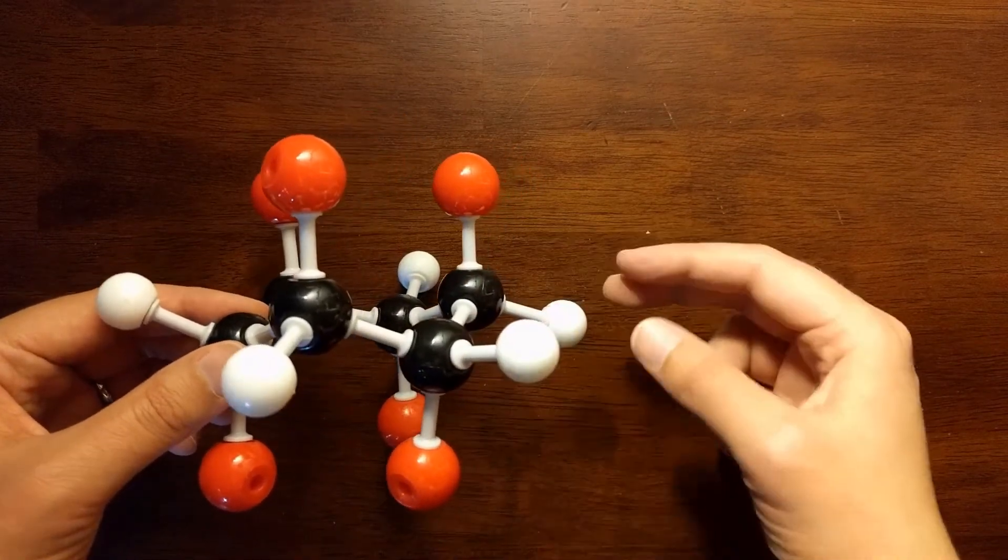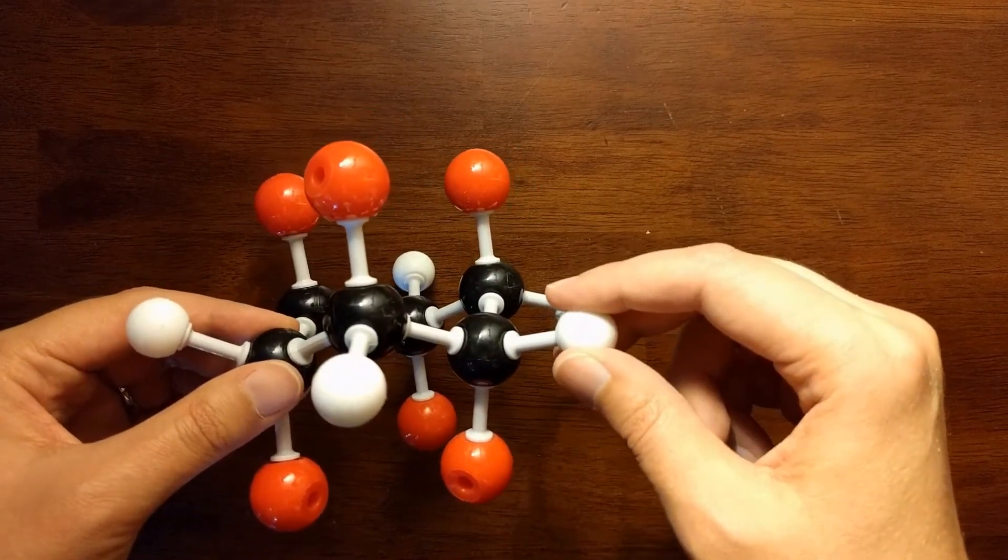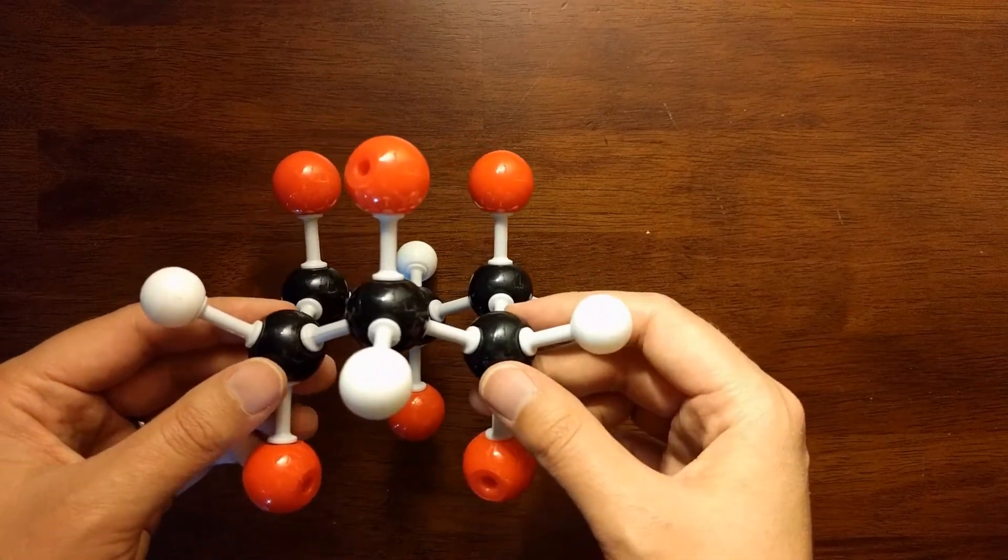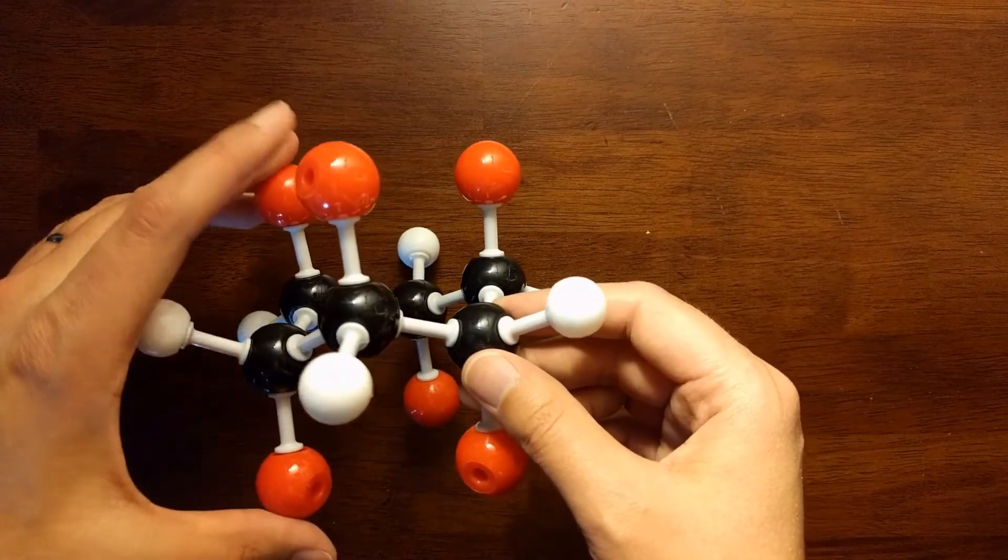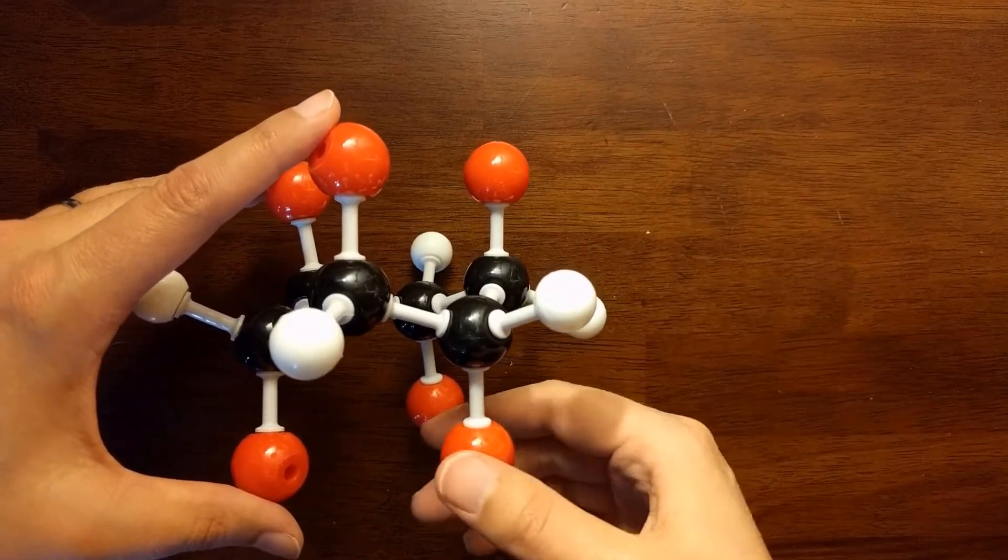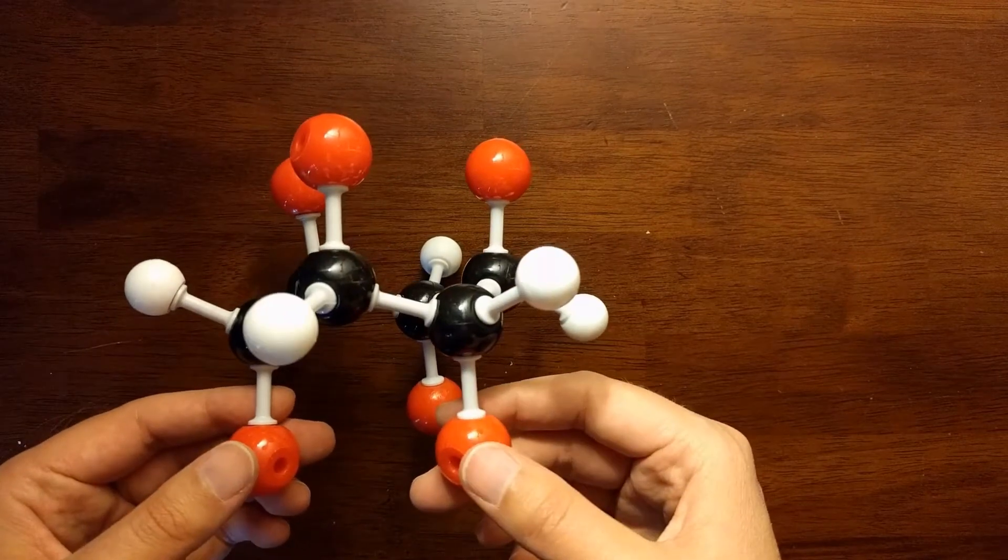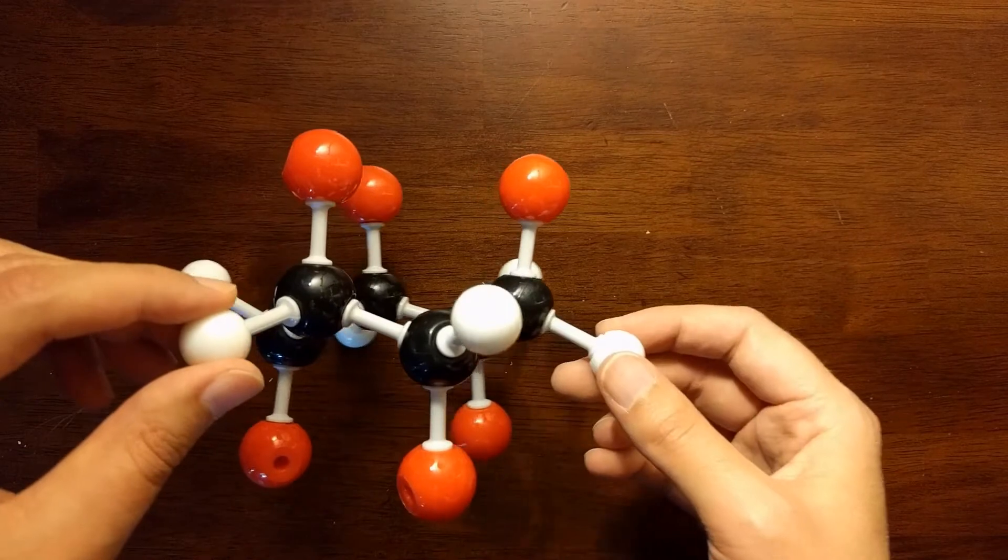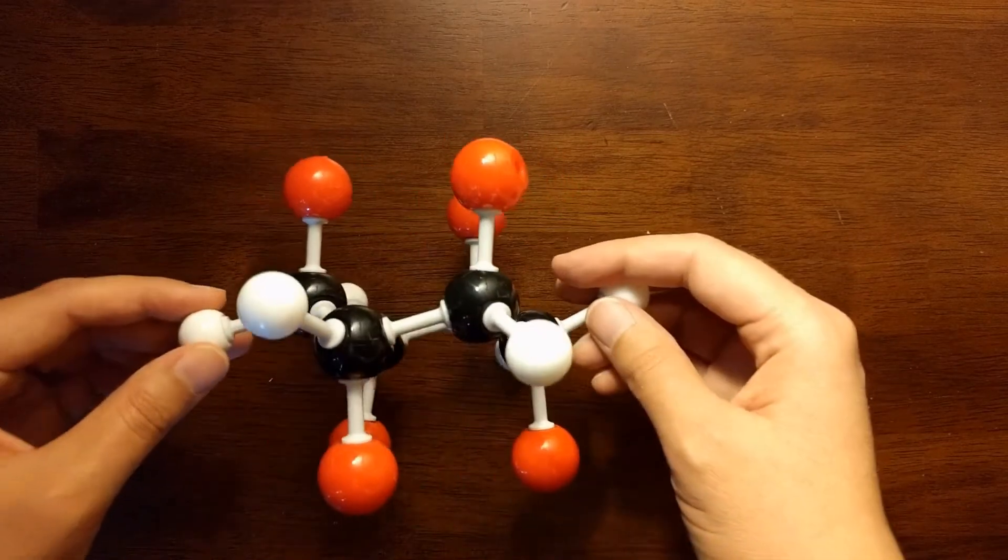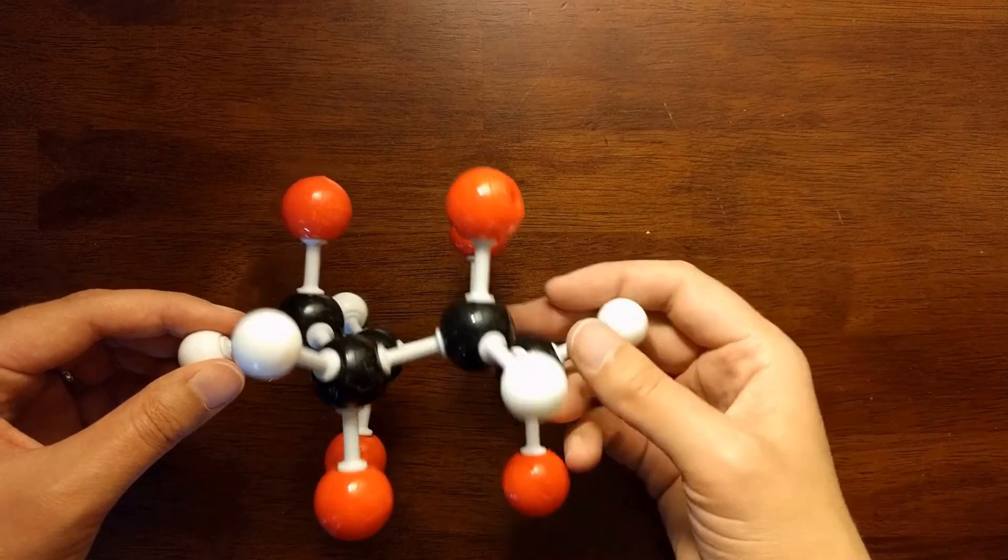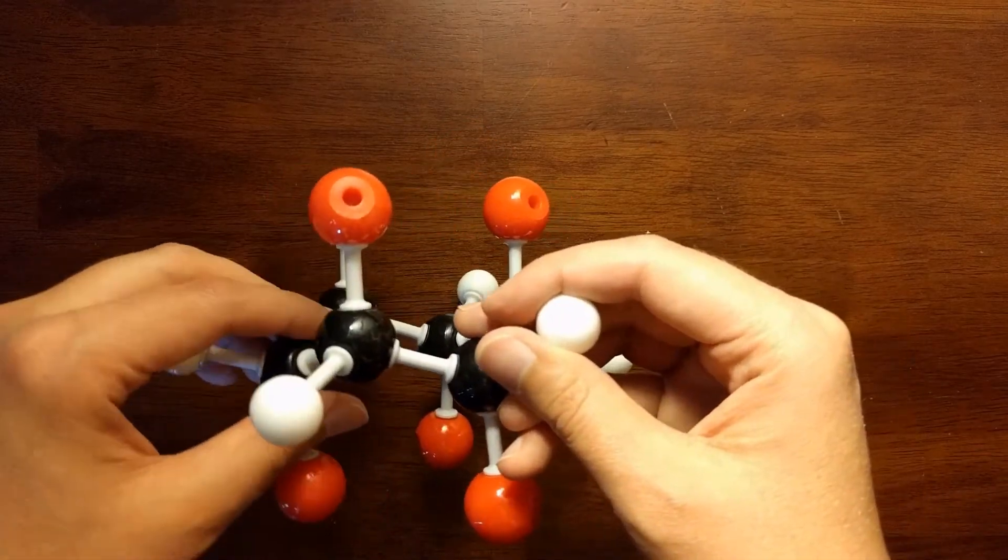Notice that each of these black carbons has one white hydrogen and one red hydrogen. In this particular chair conformation, the red hydrogens are all pointing either straight up or straight down. These red hydrogens are in axial positions. The white hydrogens are in equatorial positions. They are going out to the sides. Think of them as pointing out from an equator.